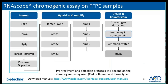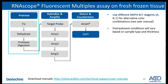The workflow on the Leica Bond RX and Ventana systems are very similar to the manual assay. Similarly, the fluorescent multiplex assay contains the four major parts but is a shorter assay. Please refer to the user manual for detailed recommendations.